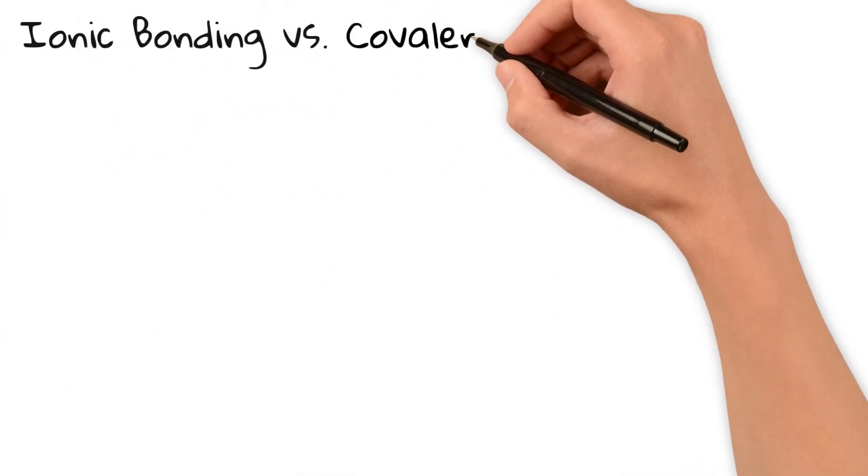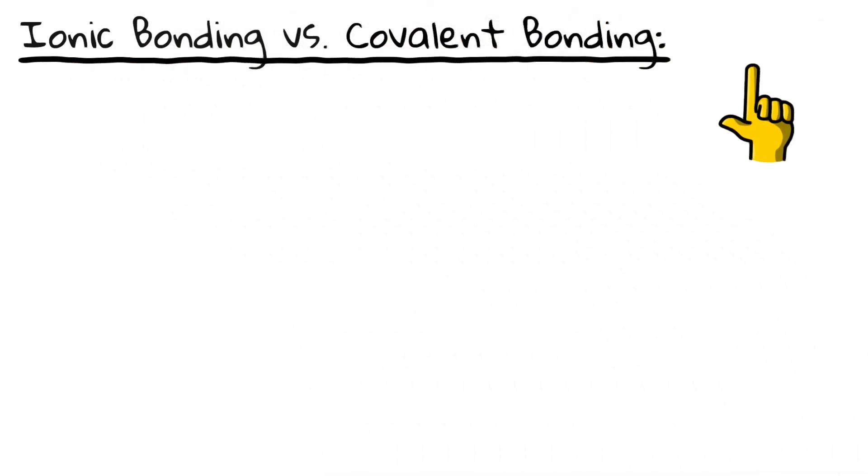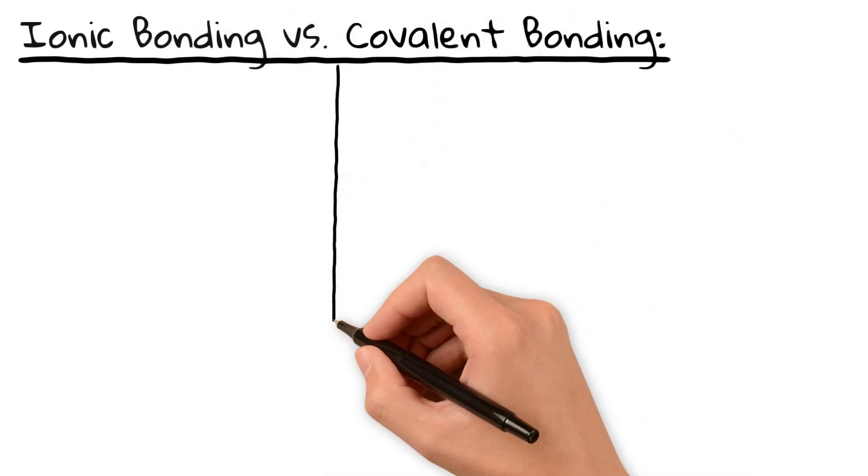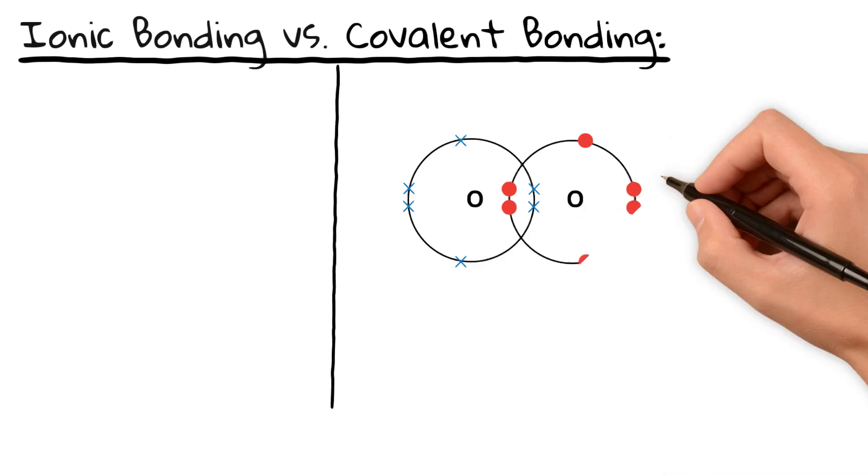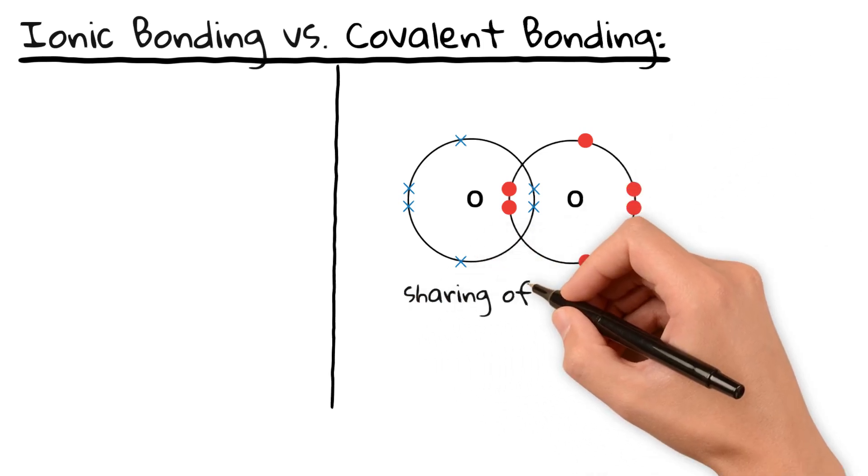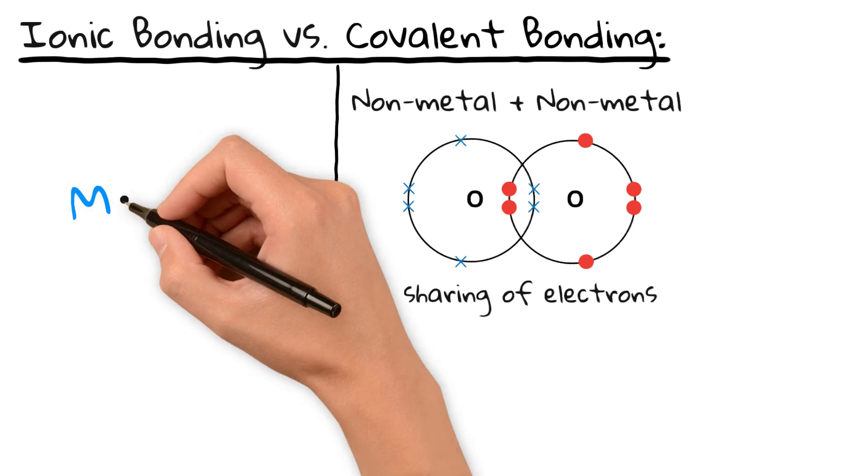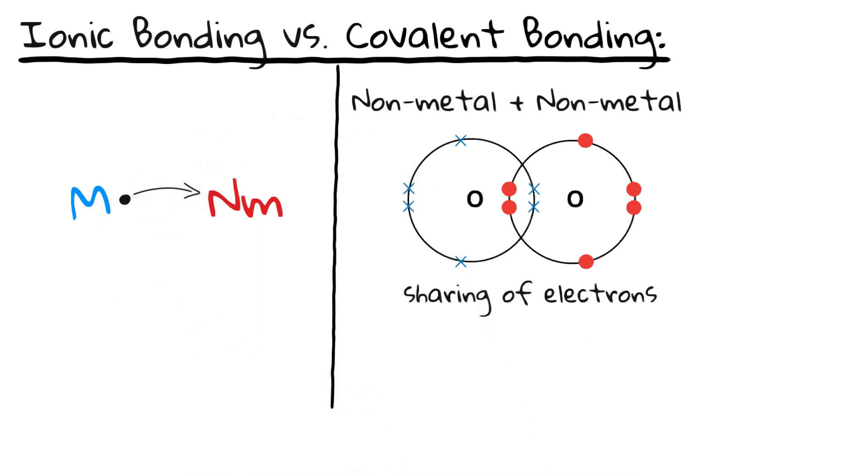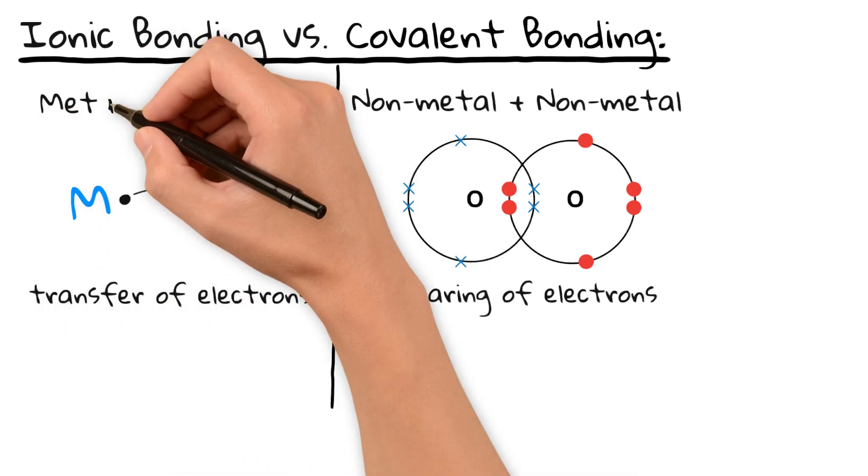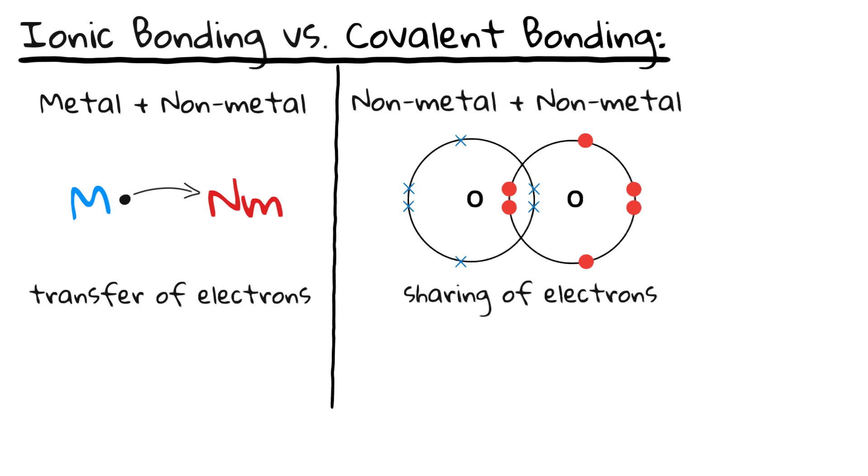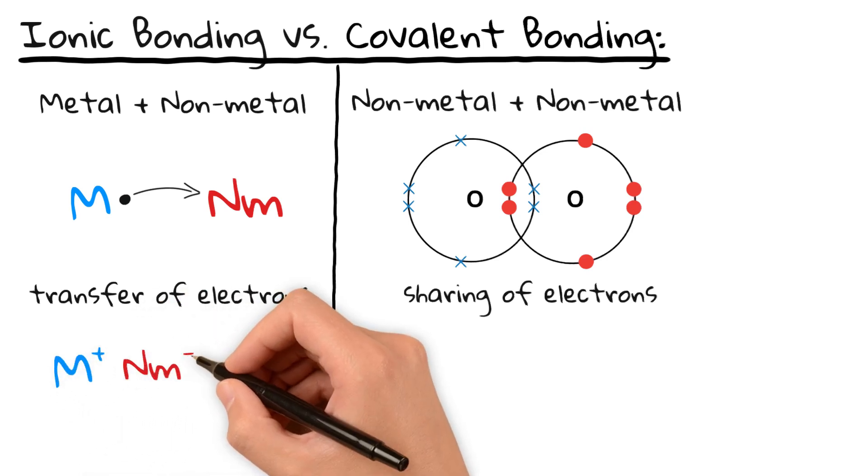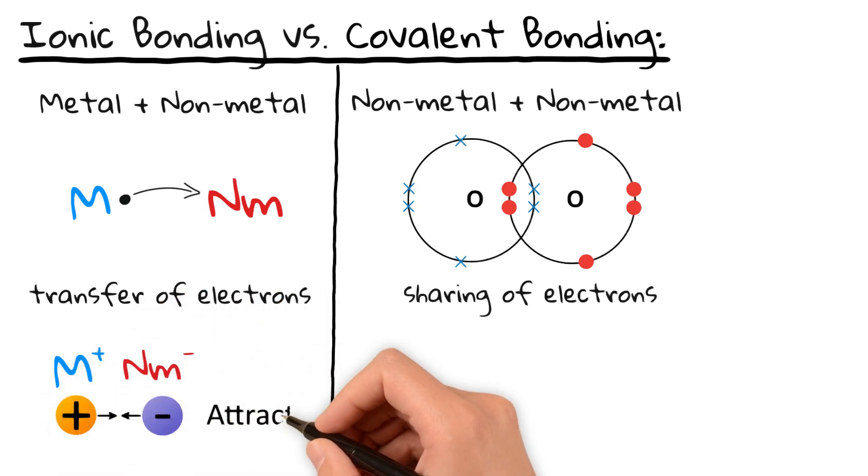Now, how does this ionic bonding compare to covalent bonding? If you remember from our covalent bonding video, non-metals don't like to give up electrons, so they share them instead. That's why covalent bonding happens between two non-metals. But in ionic bonding, metals are happy to give away electrons and non-metals are eager to take them. This electron transfer creates ions which attract each other forming a strong bond.